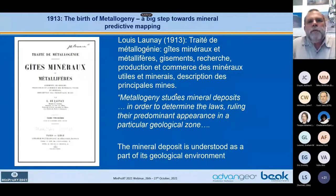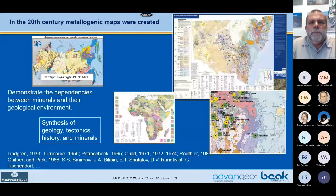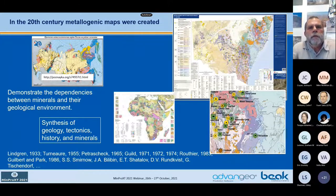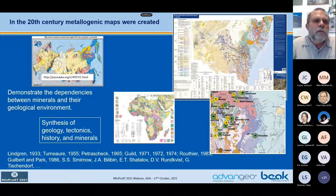A big step ahead was the birth of metallogeny, the science on how mineral occurrences relate to their geological environment. The name associated here is Saloni from France in 1913. Based on these studies, in the 20th century, a lot of metallogenic maps have been created, showing the dependencies between the locations of mineral occurrences and their types and the surrounding geology, tectonics, and history.